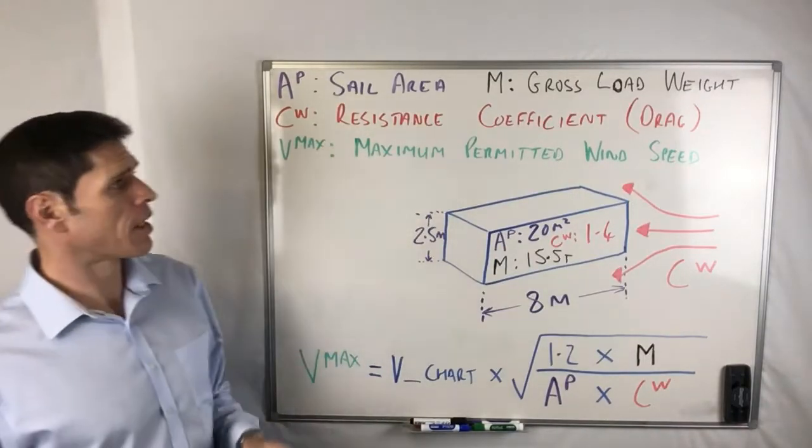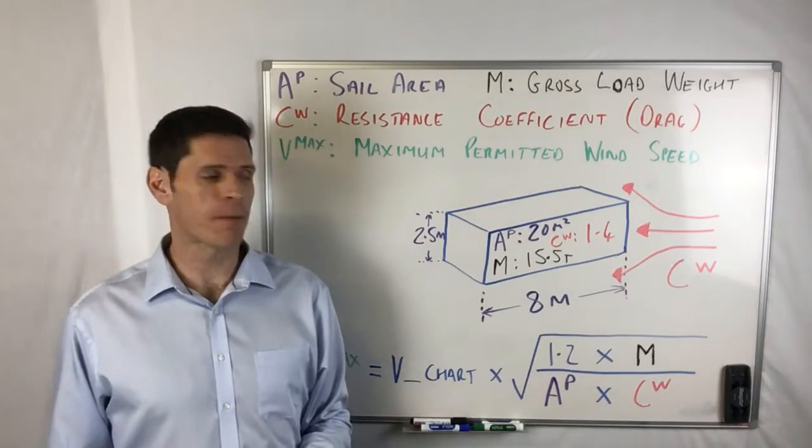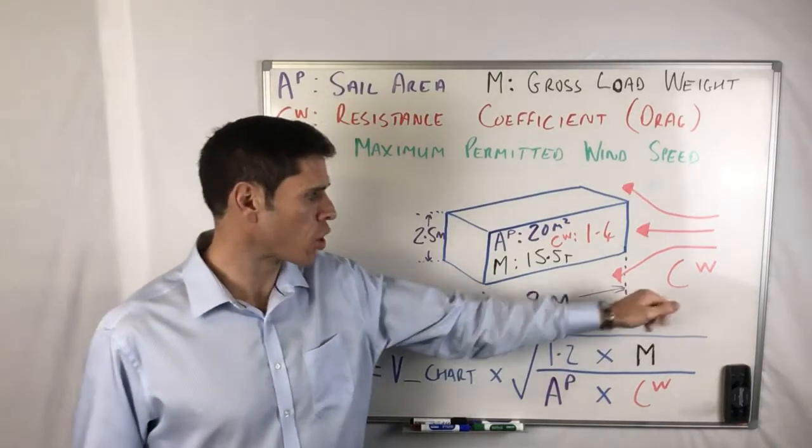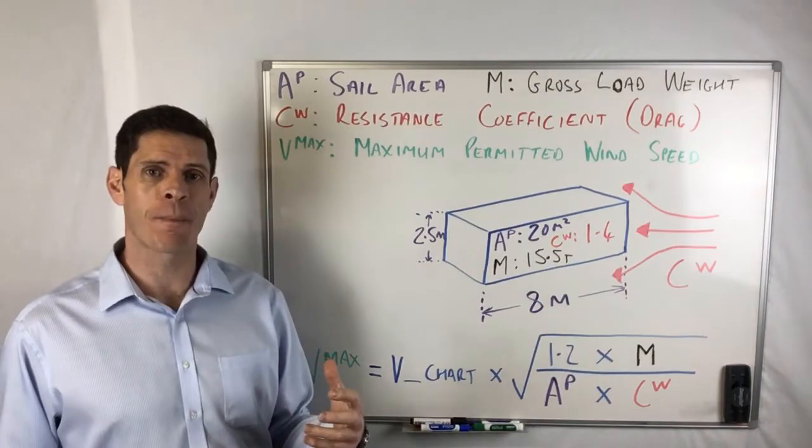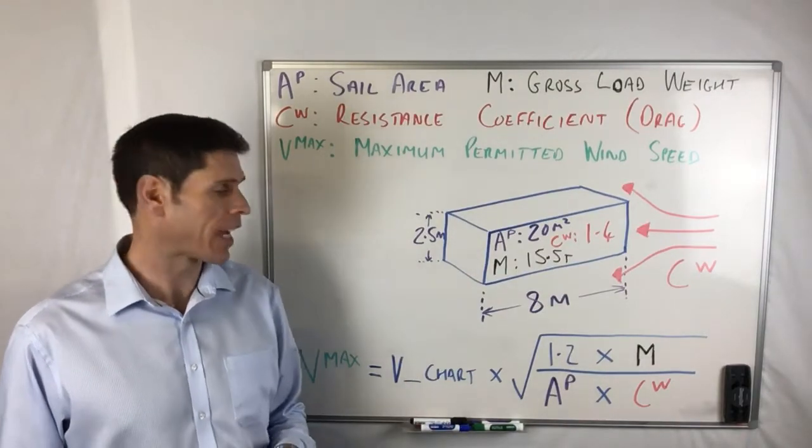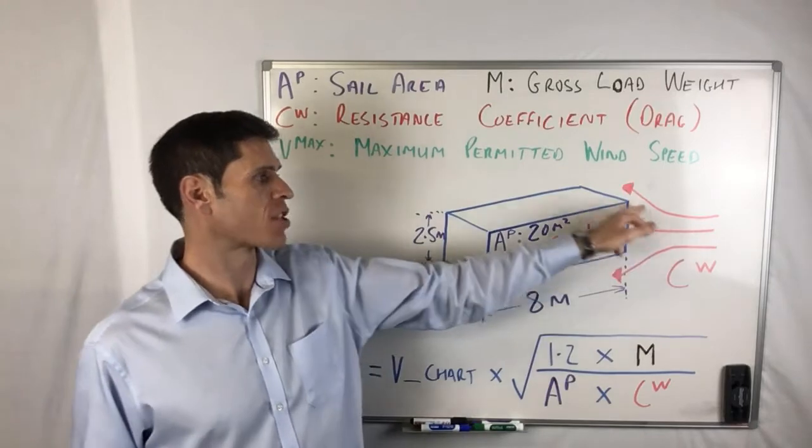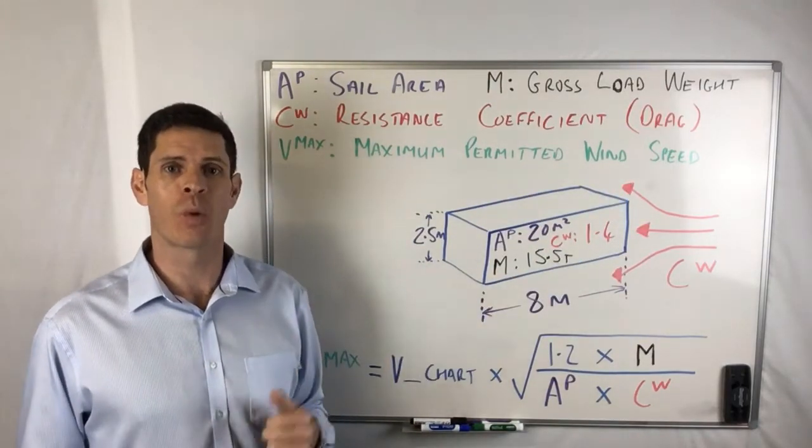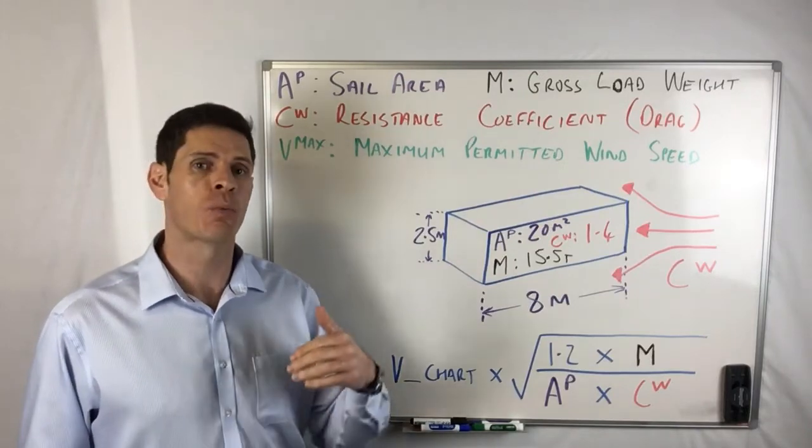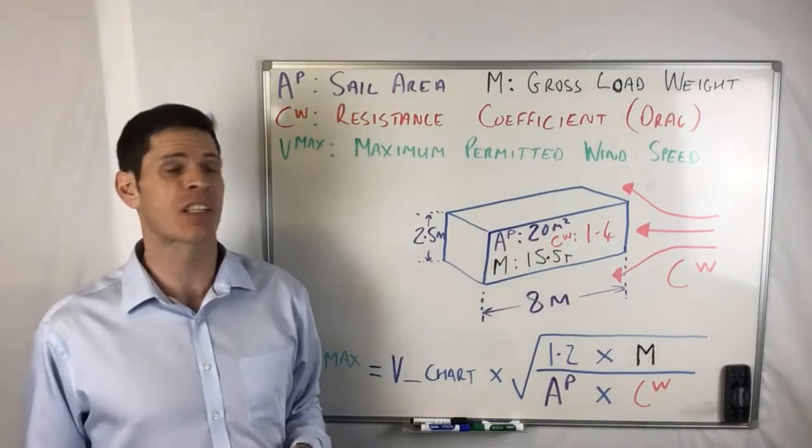The next element is resistance coefficient, so CW as the symbol is for that. Now what that is about is how the wind will actually behave when it hits the load. Is it going to pass around easily or is there going to be a lot of drag when the wind actually hits the load which will result in an increased resistance coefficient.